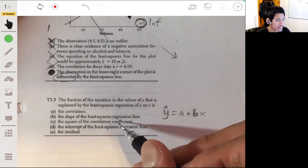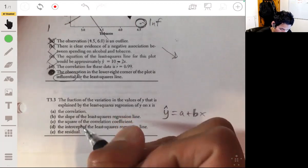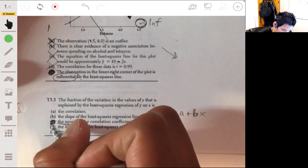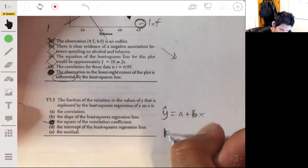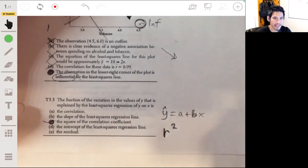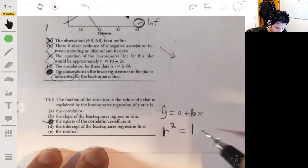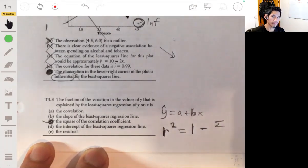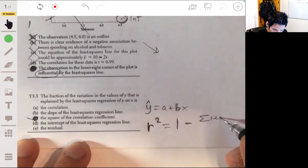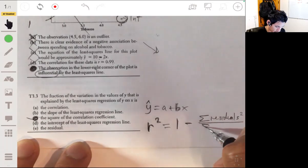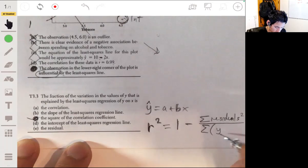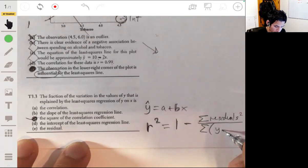The square of the correlation coefficient—this is what that is. It's C. That's what r-squared is. R-squared is the square of the correlation coefficient, by definition. That's what this is. The formula would be one minus the sum of the residuals squared, divided by the sum of each of the y values from the mean, all squared.